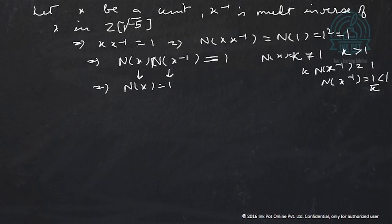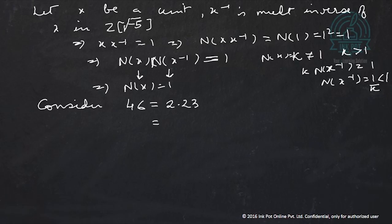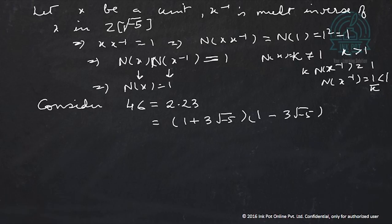Now we consider the element 46 and its two factorizations. We have 46 equals 2 times 23, and also 46 equals (1 + 3√-5)(1 − 3√-5) — you can multiply and verify this equals 46. We claim that each of the factors 2, 23, (1 + 3√-5), and (1 − 3√-5) are irreducible over ℤ[√-5]. Suppose 2 equals xy where x and y belong to ℤ[√-5] and suppose x and y are non-units.